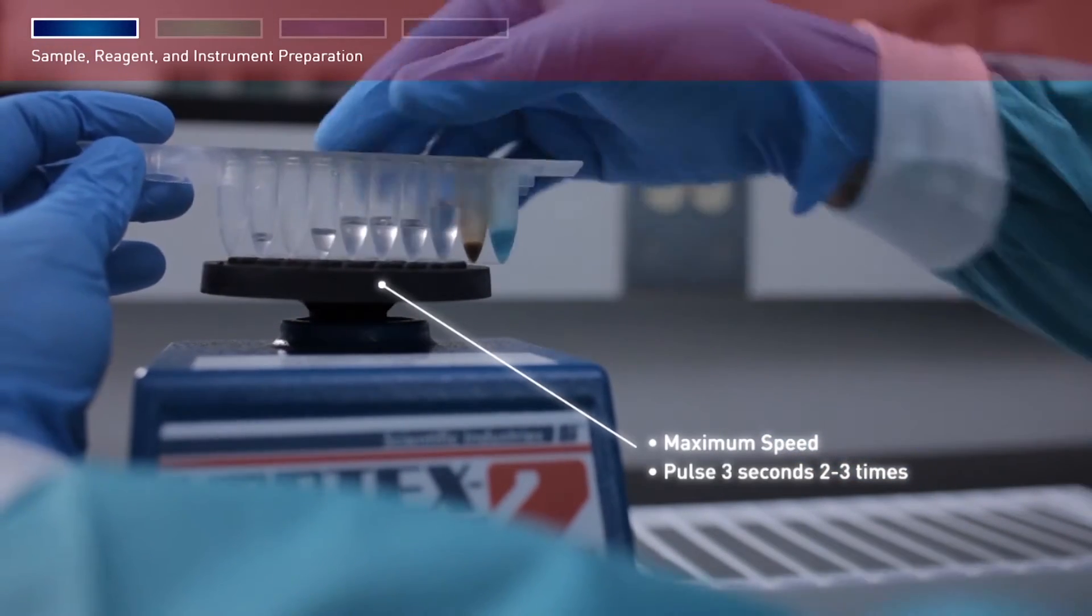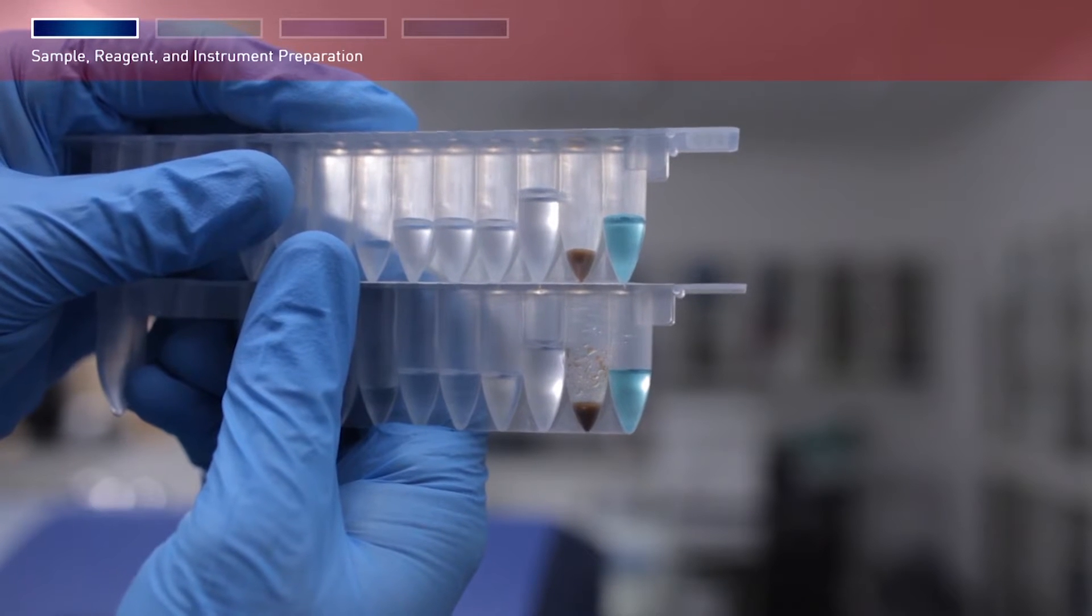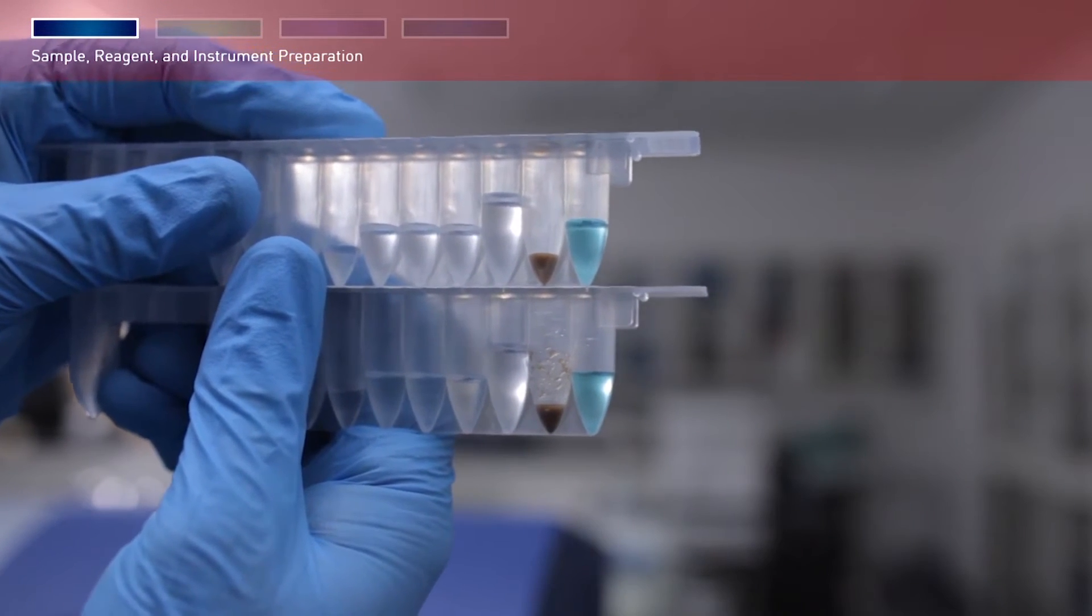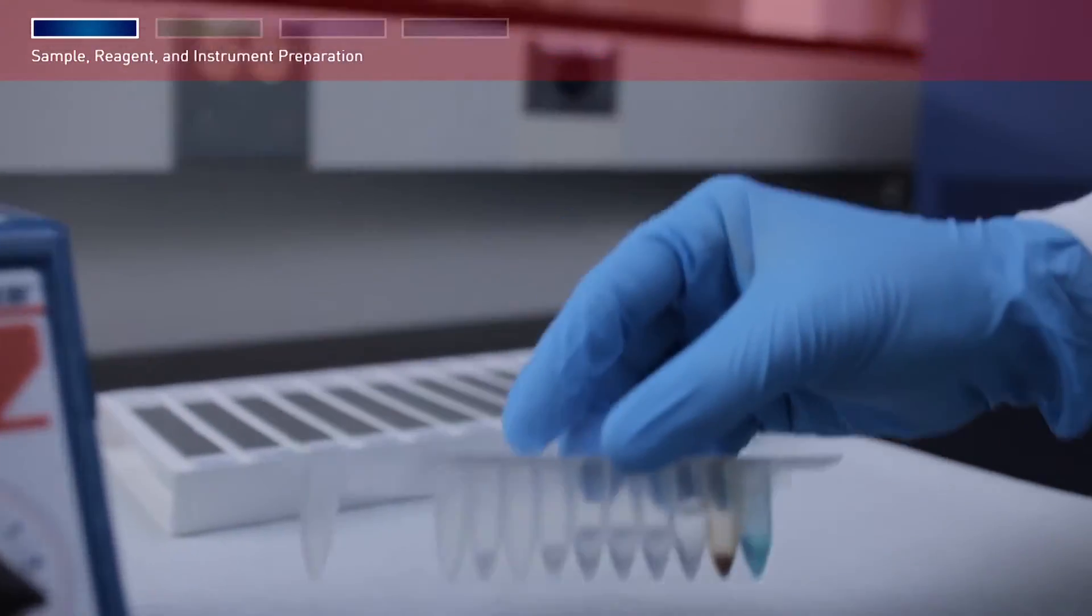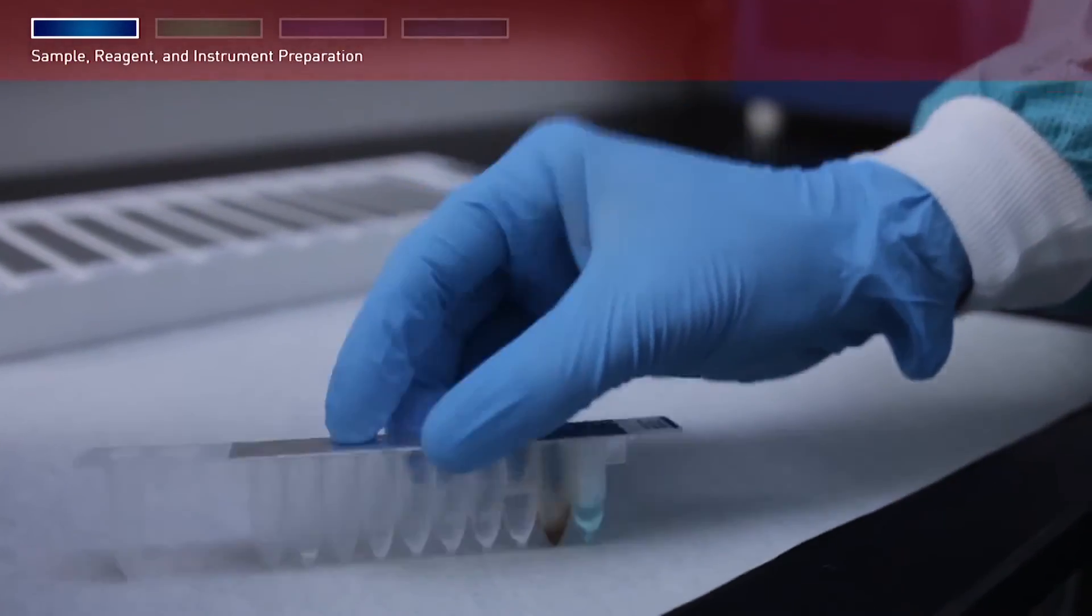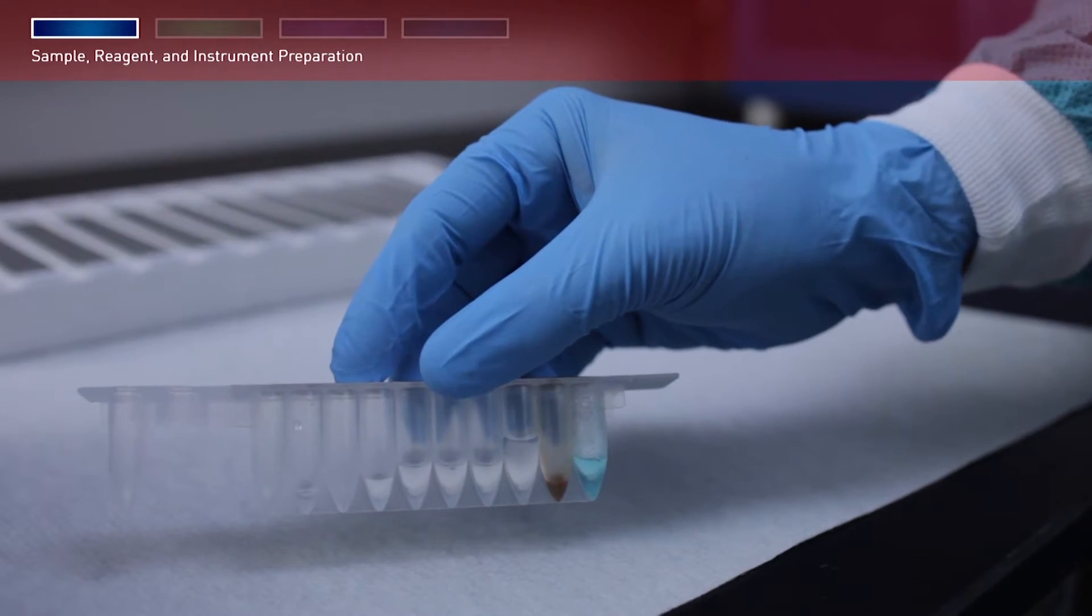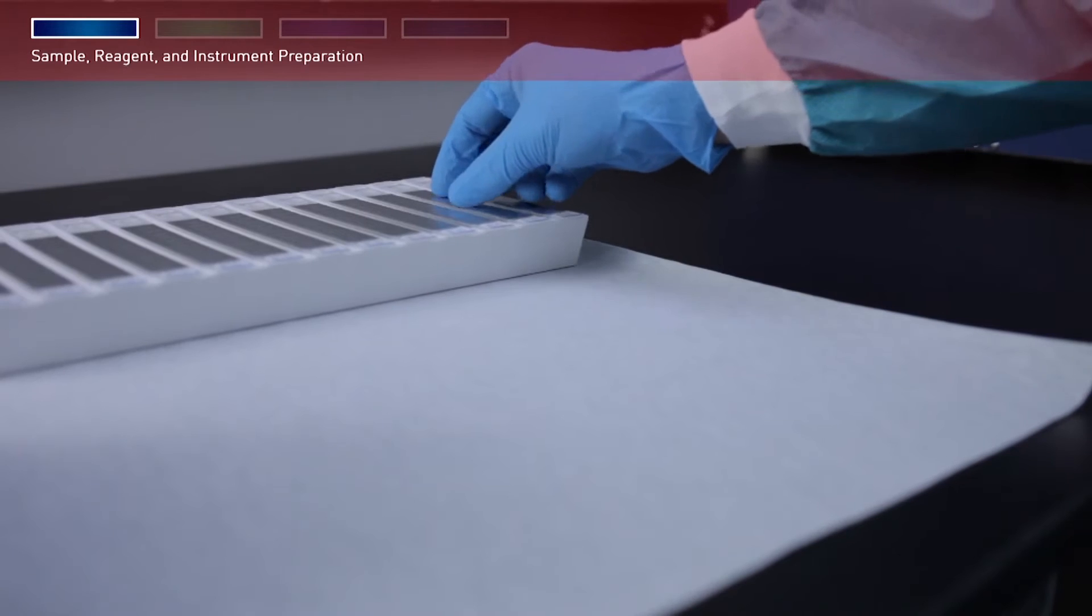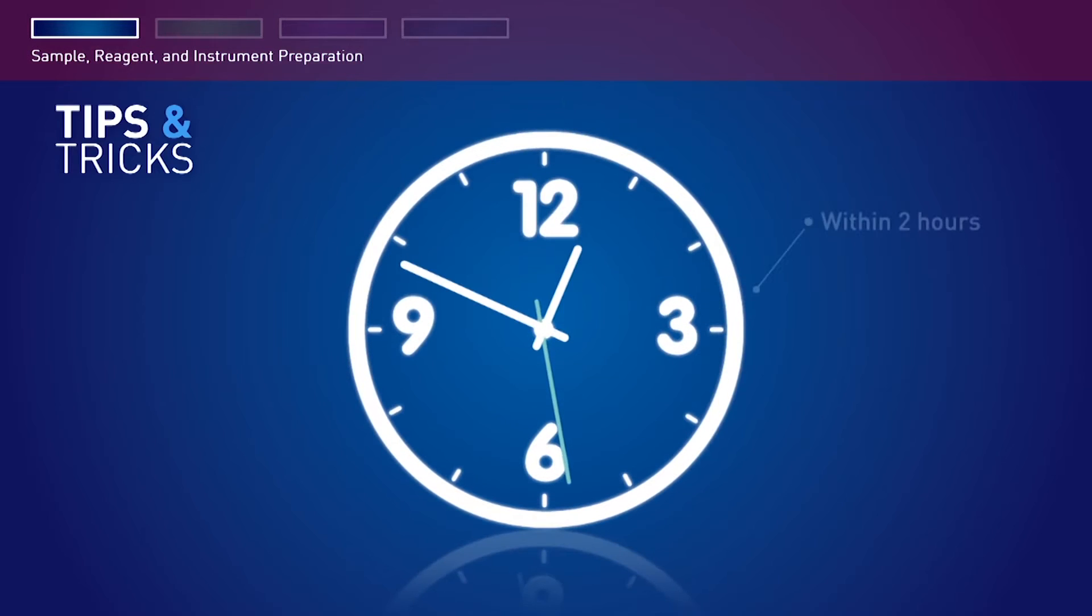Visually confirm that the magnetic particles are resuspended. If not, repeat vortexing. Hold the cartridge foil side up, then tap the cartridge on the counter several times to deposit any particles or liquid droplets into the bottom of the compartments. After resuspending the magnetic particles, use the cartridges within two hours or perform this step again before using.